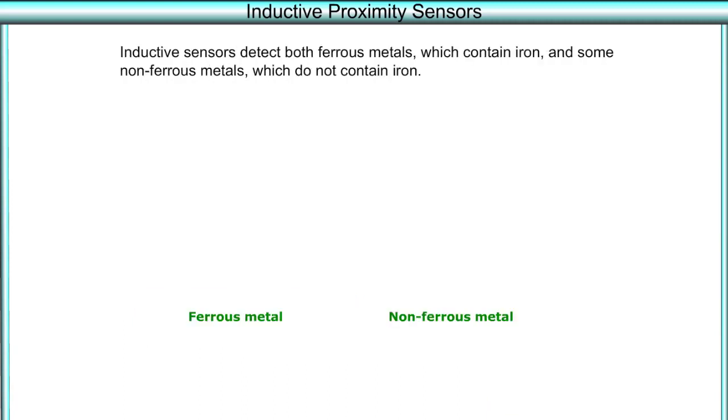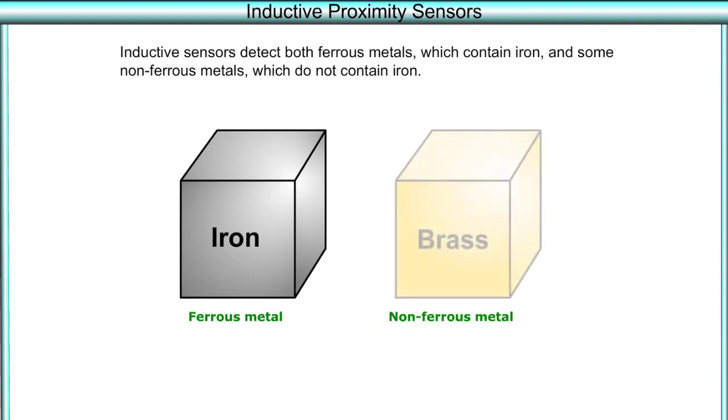Inductive sensors detect both ferrous metals which contain iron, and some non-ferrous metals which do not contain iron.